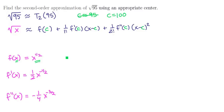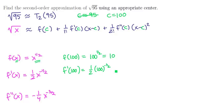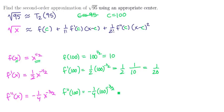Taking f of 100: that's 100 to the half power, or the square root of 100, which is 10. f prime of 100 is one half times 100 to the minus one half, which is one half times one over 10, or one twentieth. f double prime of 100 is negative one fourth times 100 to the minus three halves — that's negative one fourth over one thousand, giving us negative one four thousandth.